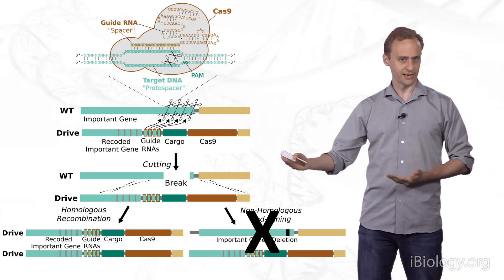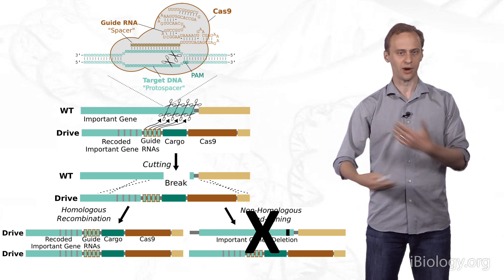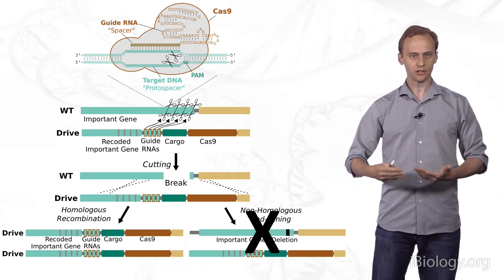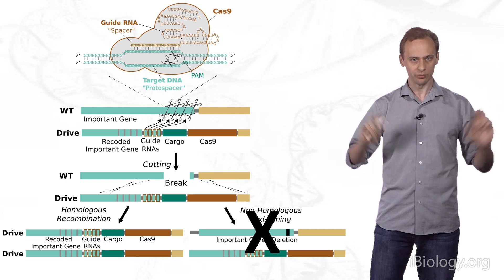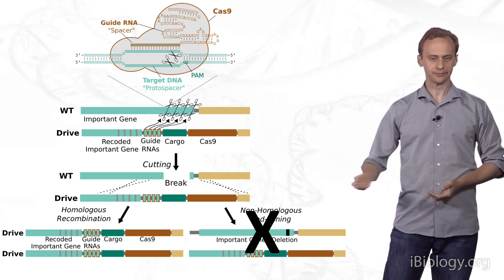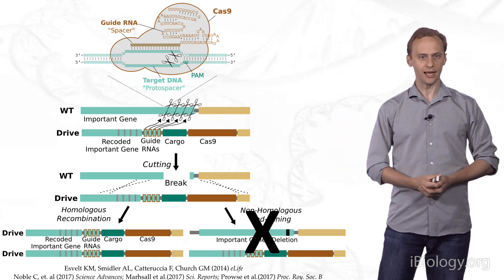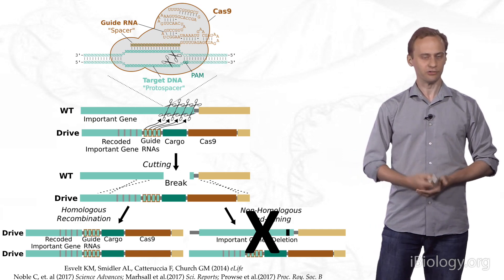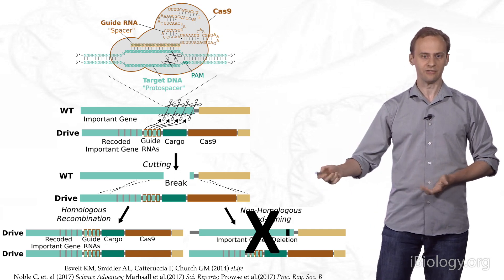Using this design, natural selection will favor the drive system, meaning that it should not be blocked by resistant alleles that cannot be cut. Several models, and more recently experiments, have supported the effectiveness of this design.